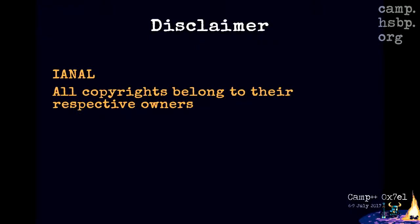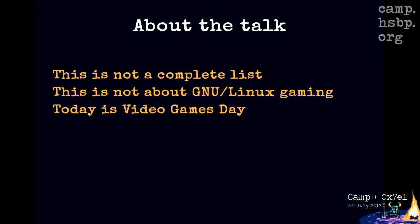I also worked on a game as a community manager called Heavy Gear Assault. For disclaimer, I'm not a lawyer, and all copyrights belong to their respective owners. What's the scope of this talk? This is by no means a complete list of open source games, engines, tools, and such, and it's not exclusive about GNU Linux gaming. It's meant to categorize video game related software and content based on the availability of the source code and assets, and to describe how this affects the industry and the community built around such games.